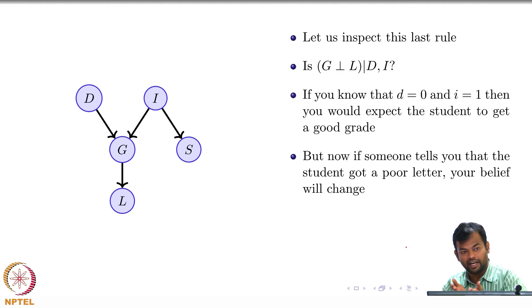It is, right? Because the influence does not flow just one way. You know that the letter was bad, that means something would have gone wrong with the grade, right?